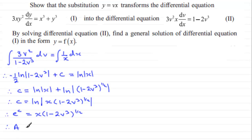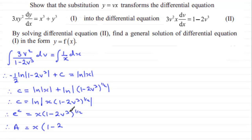Since e to the c is a constant, we can call it A. So A equals x multiplied by 1 minus 2v cubed to the power of a half. At this point we substitute v equals y over x, so v cubed becomes y cubed over x cubed, giving A equals x times 1 minus 2y cubed over x cubed, all to the power of a half.